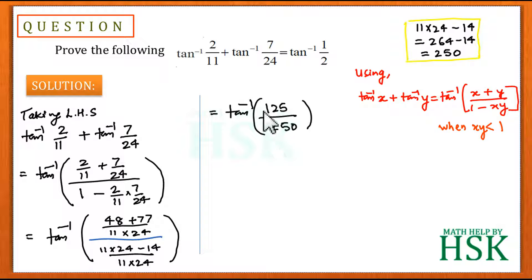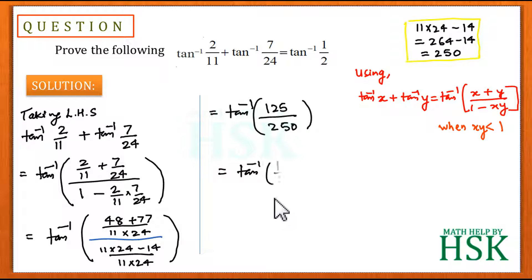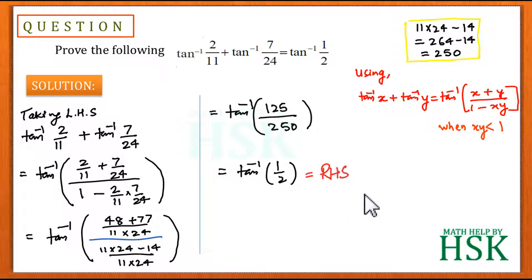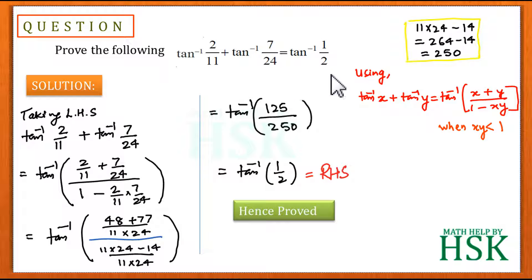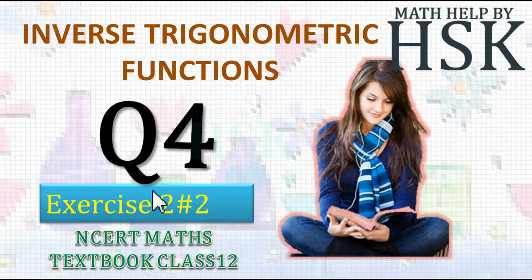So this becomes tan⁻¹(125/250). Clearly, 125/250 simplifies to 1/2, so this equals tan⁻¹(1/2), which is the right hand side. This proves the equation. Now taking question number 4 of exercise 2.2.